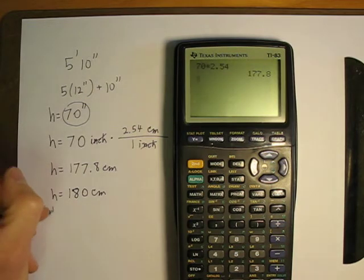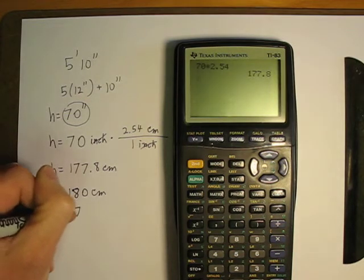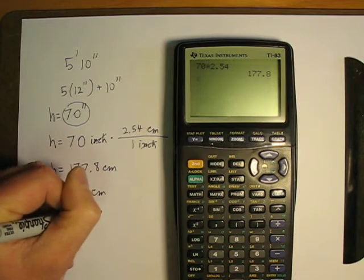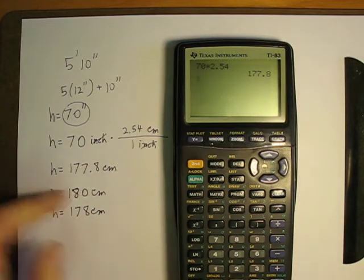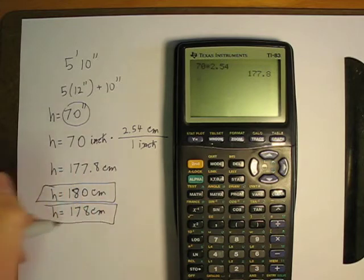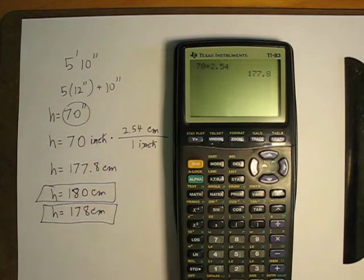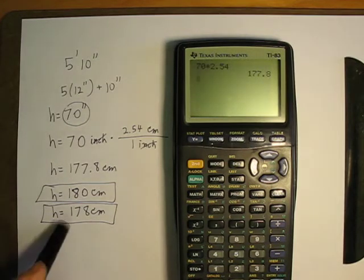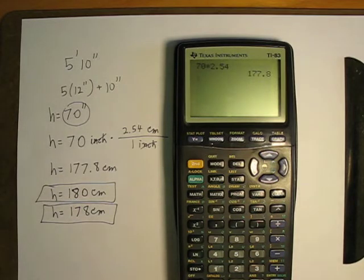I could maybe say my height is 178 centimeters, somewhere in there. Either one of those would be acceptable. This is probably what you would want the book to say. This is probably what I would say if I was just talking with people. Let's say I'm 178 centimeters, plus or minus a centimeter or two. There's an example of a conversion with height or distance.